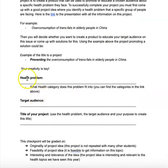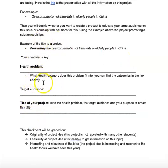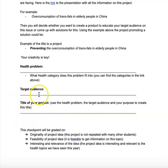Once I've got my health problem and my target audience, now I want to create my title. It could be anything — the health problem could be obesity, the target audience could be children in the United States: obesity and children in the United States. Then I come up with my purpose, for example creating awareness. So based on my purpose, my health problem, and my target audience, I come up with one title that I will either tell you is good and you can continue working, or I will help you mold it and change it.